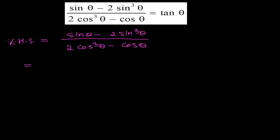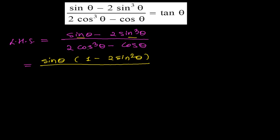What can I do here? See, here is sin θ and here is sin³θ. So sin θ is common in both places — I am taking sin θ common, and it will now be 1 minus 2 sin²θ. And then in the denominator, I am taking cos θ as common, because here is cos³θ and there is only 1 cos θ. So I will be left with 2 cos²θ minus 1.